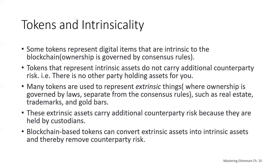Conversely, many tokens are used to represent extrinsic things such as real estate, corporate voting shares, trademarks, and gold bars. The ownership of those items, which is not within the blockchain, is governed by law, custom, and policy — separate from the consensus rules that govern the token. Token issuers and owners may still depend on real-world non-smart contracts. As a result, these extrinsic assets carry additional counterparty risk because they're held by custodians, recorded in external registries, or controlled by laws and policies outside the blockchain environment.